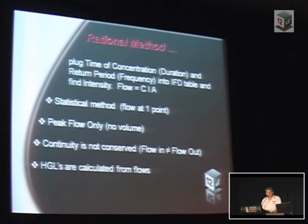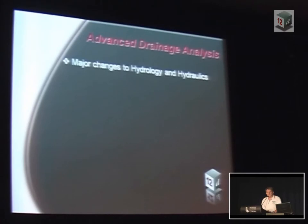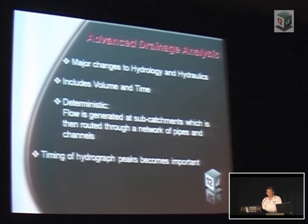Once we have that, the HGLs are calculated from those flows. In the advanced drainage, we had to make major changes to both the hydrology and the hydraulics. We now include a volume and a time component. It's now a deterministic method rather than a statistical one, so the flows are generated at a sub-catchment and then routed through a network of pipes and channels to give us our flows through the network.